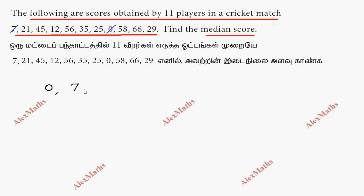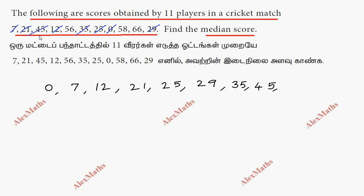Continuing the arranged data: 12 has become 21, 25 has become 29. Then 35, 45, 45, 45, 55, 58, 66.